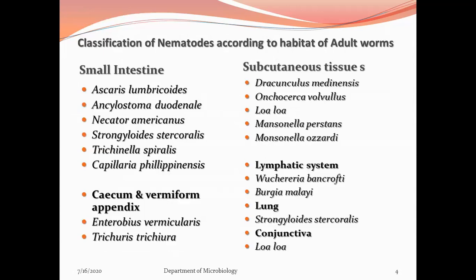Classification based on nematode habitat divides them into small intestinal and large intestinal nematodes. Small intestinal nematodes include Ascaris lumbricoides, Ancylostoma duodenale, Necator americanus, Strongyloides stercoralis, and Trichostrongylus, Capillaria, and Philippinensis. Today we will focus on Ascaris lumbricoides, Ancylostoma duodenale, Necator americanus, and Strongyloides stercoralis.